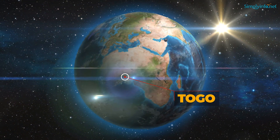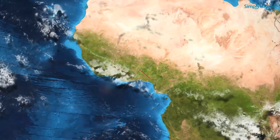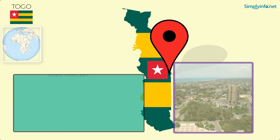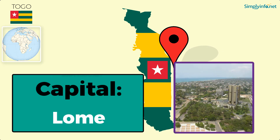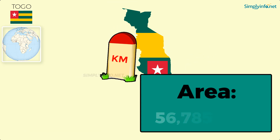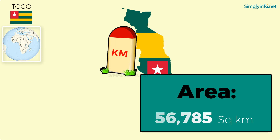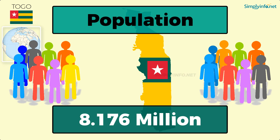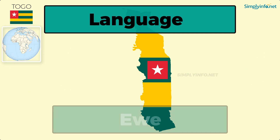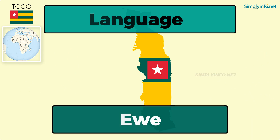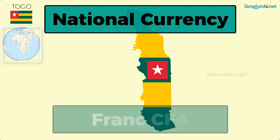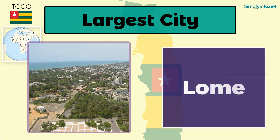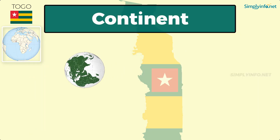Name: Togo. Official name: Togolese Republic. Capital: Lomé. Area: fifty-six thousand seven hundred and eighty-five square kilometers. Population: as of 2018, it is eight point one seven six million. Language: Ewe. National currency: Franc CFA. Largest city: Lomé. Continent: Africa.